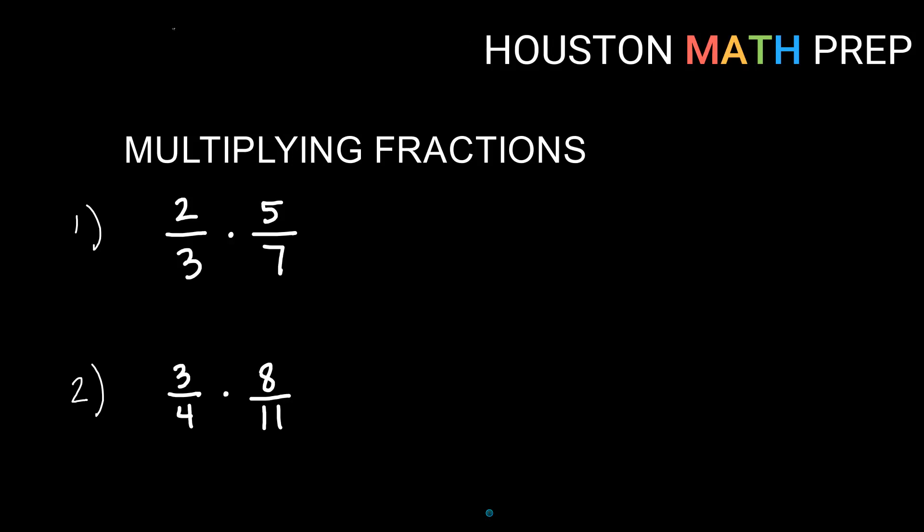So in one like this, where we have 2 over 3 times 5 over 7, then we just simply multiply straight across. 2 times 5 will give us 10 on the top, and on the bottom 3 times 7 will give us 21. Now as always, you want to look for any common factors. 10 and 21 don't share any common factors besides 1, so we would not reduce this in any way. We would leave it 10 over 21.